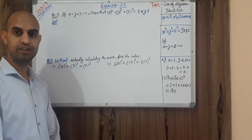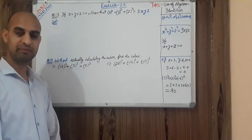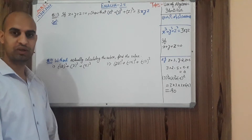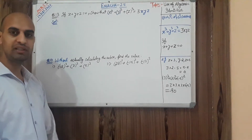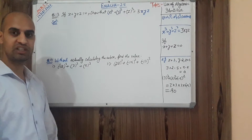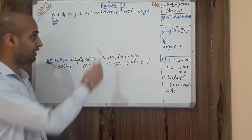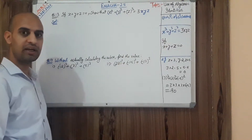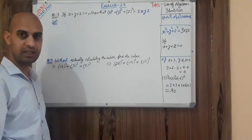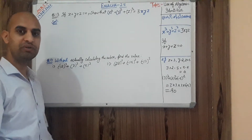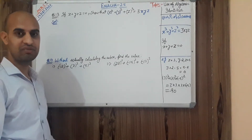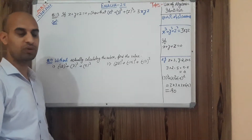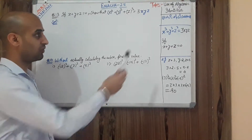Welcome, students, to the digital learning class of mathematics. As you all know, we are in chapter number 2, related to polynomials. In polynomials, we are dealing with exercise 2.5, which is related to algebraic identities. Today I am going to tell you something tricky that is very helpful to find out answers when cube roots are involved.